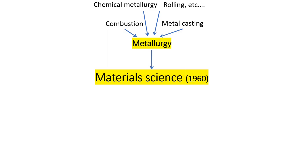Obviously metallurgy is becoming more and more scientific, at least at the universities, because new knowledge from physics and chemistry are being taken into metallurgy. That is why it is not surprising that the second pillar of material science is physics.